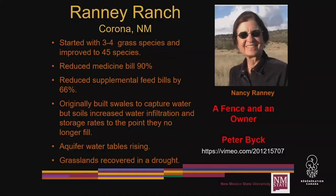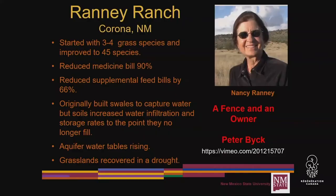This is Nancy Rainey, Corona, New Mexico — about 12 inches of rain a year. In the last decade she's gone from three species of grasses to 45. She reduced her medicine bill by 90% and reduced supplemental feed bills by 66%. She originally built swales to capture water for stock tanks, but she changed the dynamics of the soils so much in terms of infiltration and holding capacity that they no longer fill up. Her aquifer water tables are rising, and her grasslands recovered in a total drought.